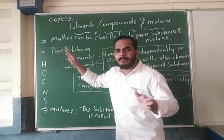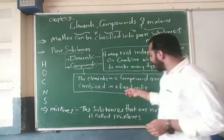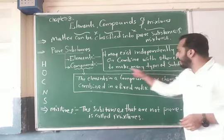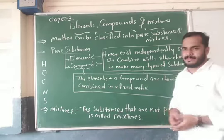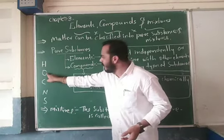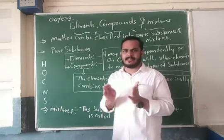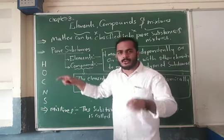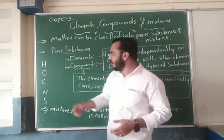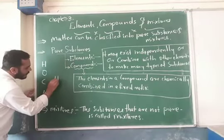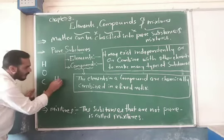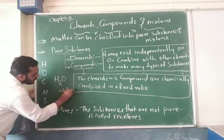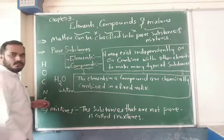These elements exist independently, or they can be combined with other elements. Hydrogen and oxygen are two different elements with different characters and different properties. But when both of them combine, they form a compound — water. Two atoms of hydrogen combined with oxygen form water. Similarly, carbon reacts with oxygen to form carbon dioxide.